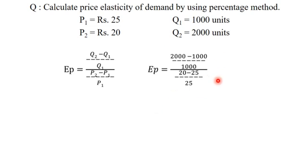Here is the calculation which I am going to explain to you. We should fit the data into this equation. Q2 minus Q1 is 2000 minus 1000, divided by Q1 which is 1000, whole divided by P2 which is 20, minus P1 which is 25, divided by P1 which is 25.